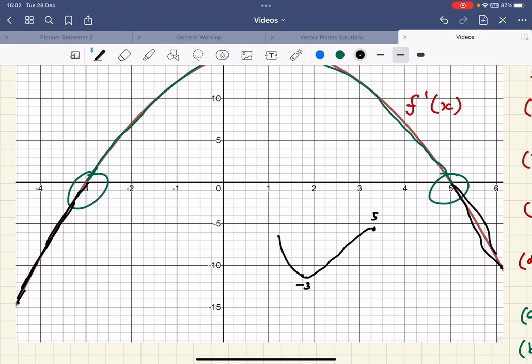So the whole time from -3 to 5, we have an increase in function. And after 5, it's decreasing again. So although we don't have f(x), we can make a quick sketch here and we can see what's happening.